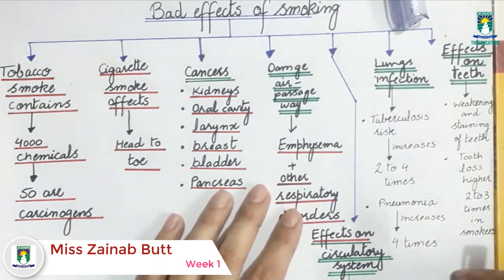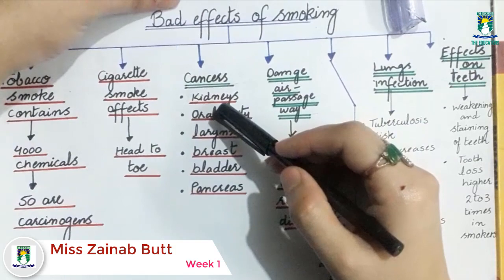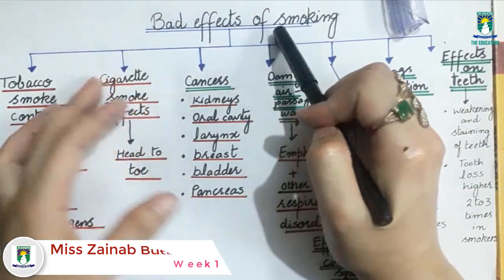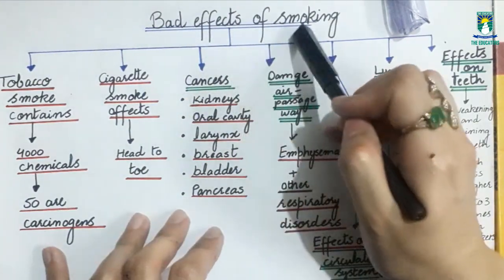As you know that we are discussing class 10 biology chapter number 10 gaseous exchange. So the last topic from this chapter is bad effects of smoking. As you know that all of your respiratory disorders are smoking related.